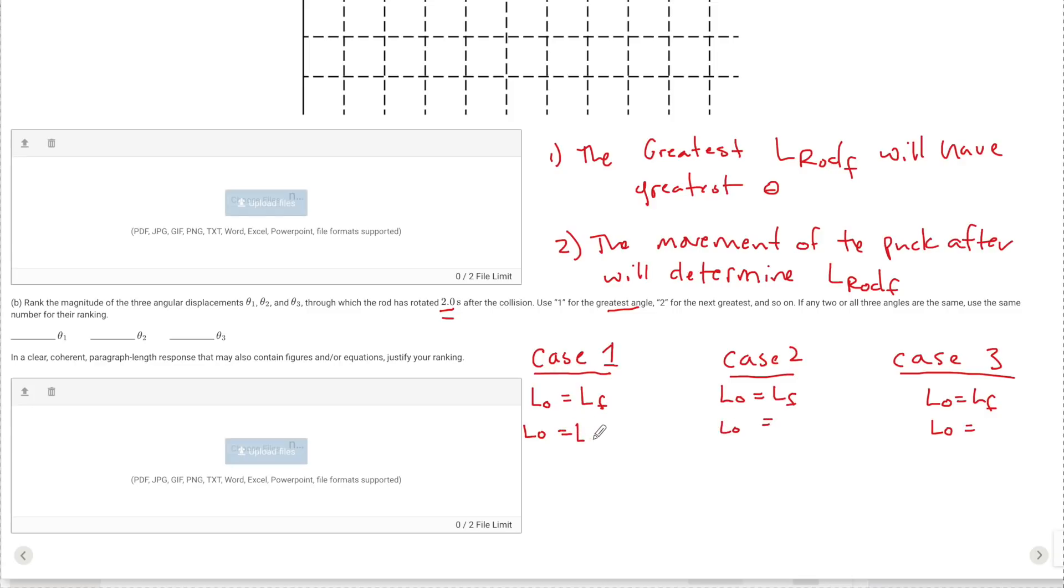But now after the collision I'm going to have L final of the rod minus L final of the puck. And the reason I minus this is because it's moving in the opposite direction. Right in this first case the rod went this way the puck went that way. So this has to be minus. So now I can set up an expression and say that L final of the rod is going to be equal to the initial momentum of the system plus the L final of the puck. And that's going to be for case number one.